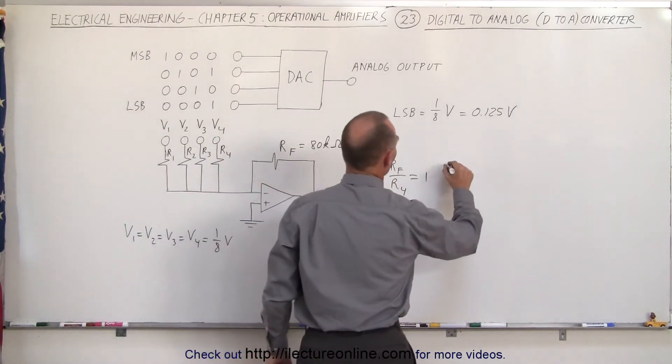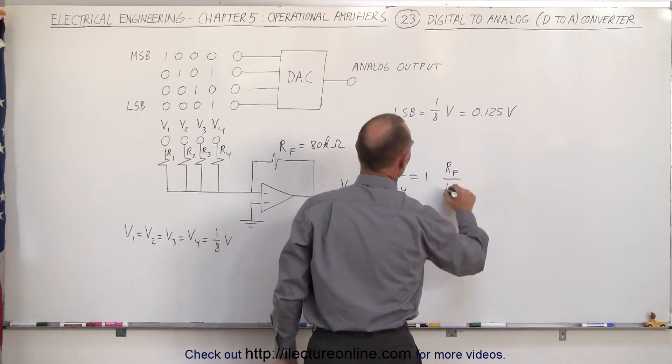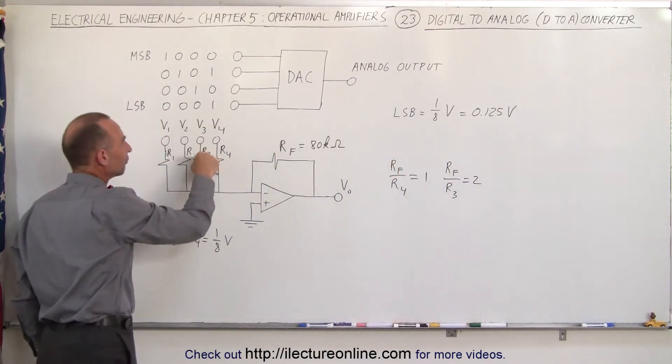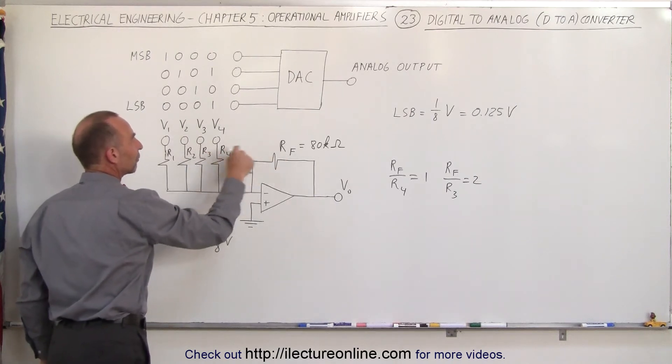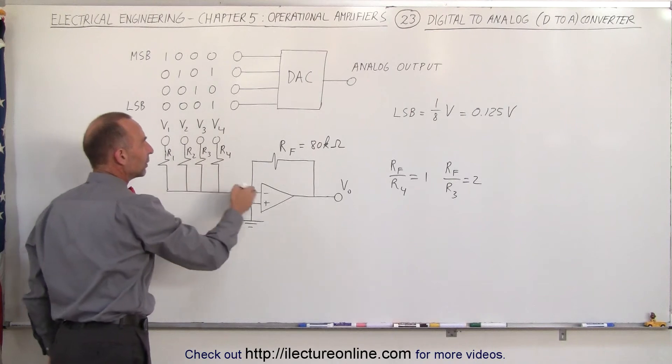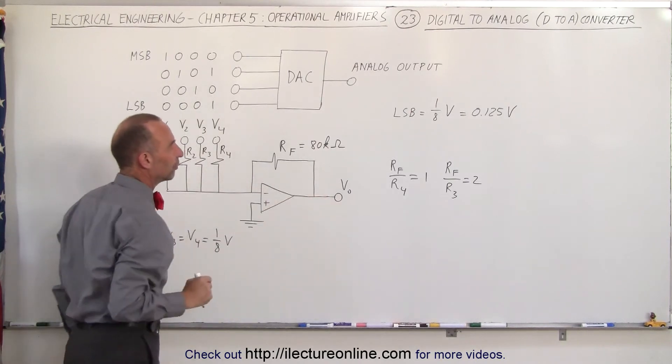If we then make the ratio of RF to R3 equal to two, then if the input here is one eighth of a volt, we then have an amplification of two to one, that makes that into a quarter of a volt, so V3 will then be amplified to one quarter of a volt.